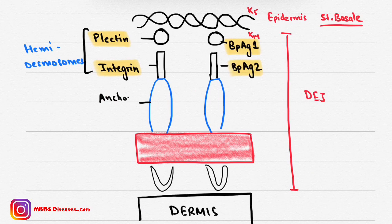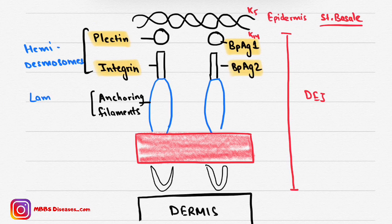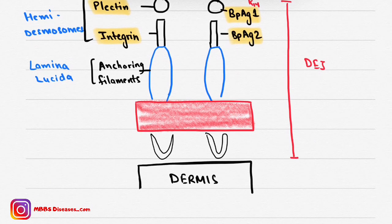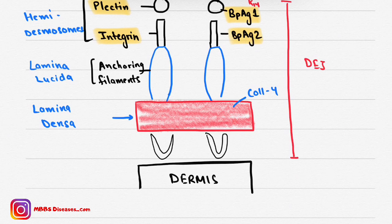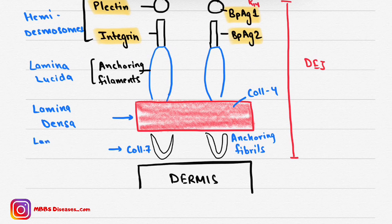The next components are anchoring filaments. The layer containing anchoring filaments is known as lamina lucida, also known as the salt split layer. The next layer is lamina densa — it is a dense part made up of collagen type 4. The last layer is made up of collagen type 7 and contains anchoring fibrils; this layer is known as lamina fibro reticularis.